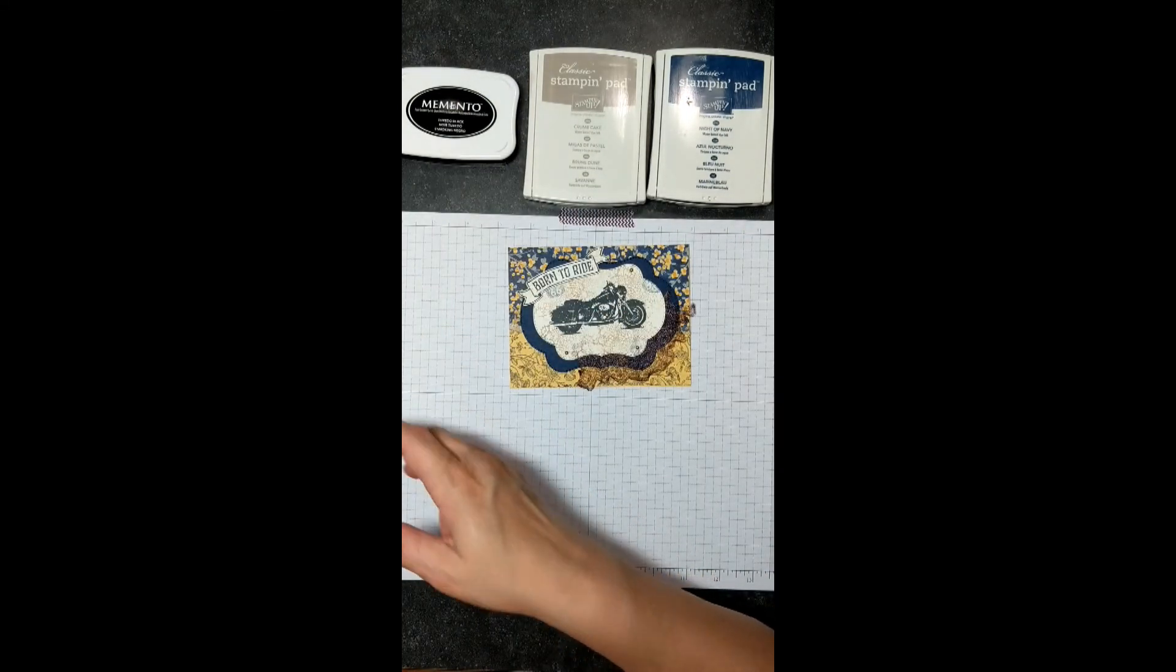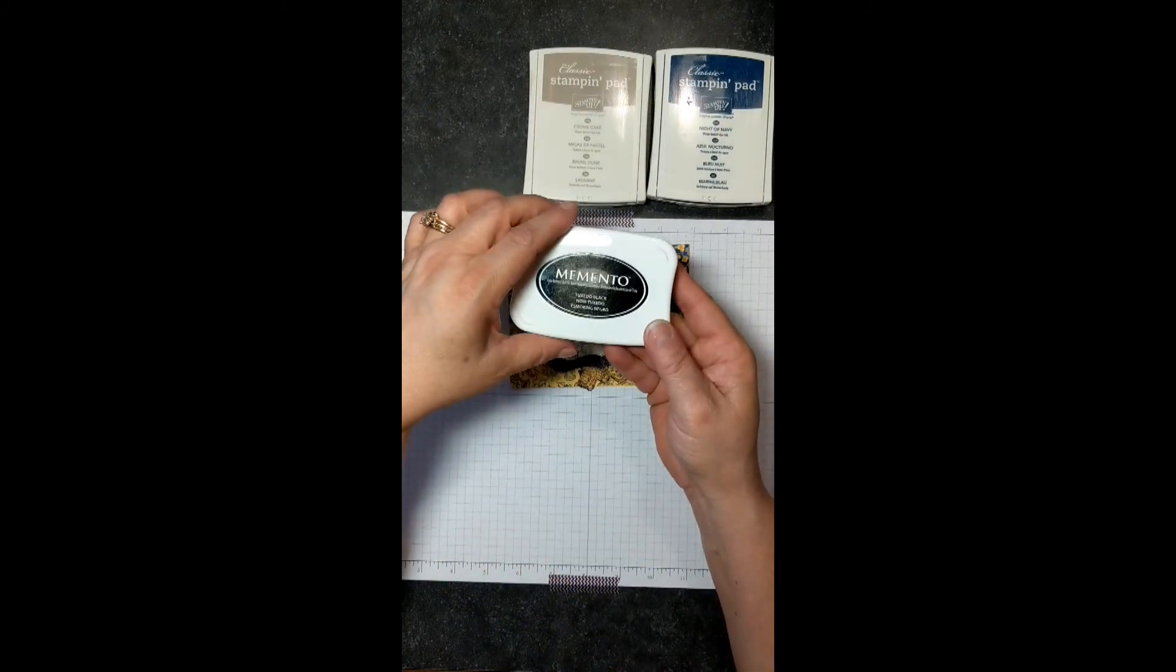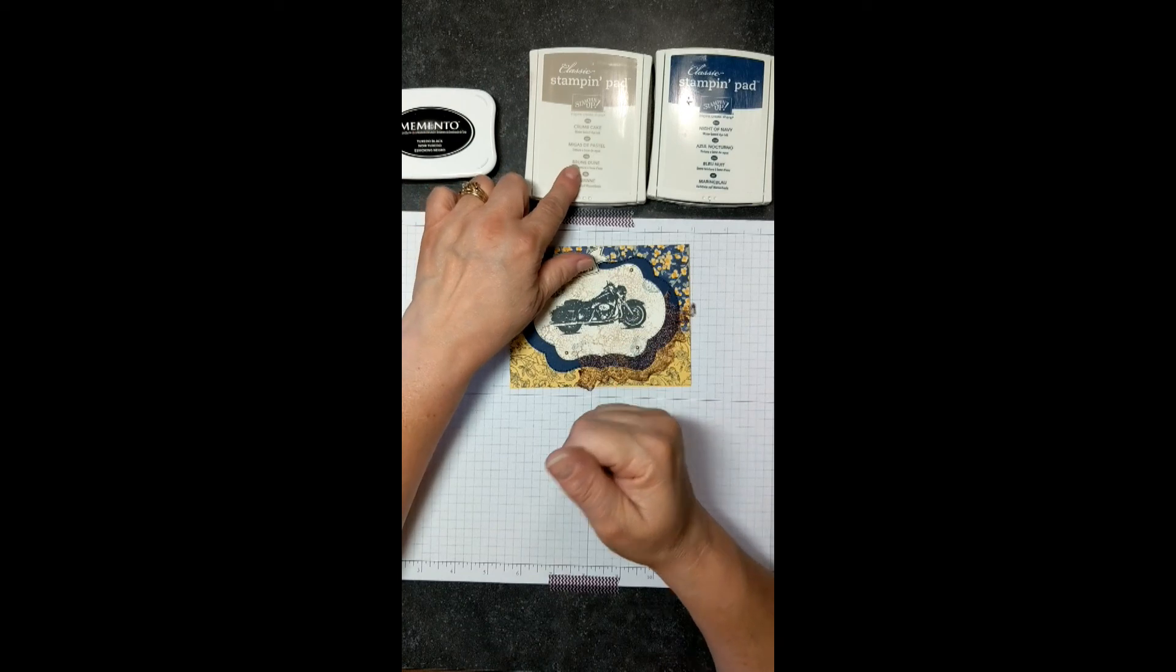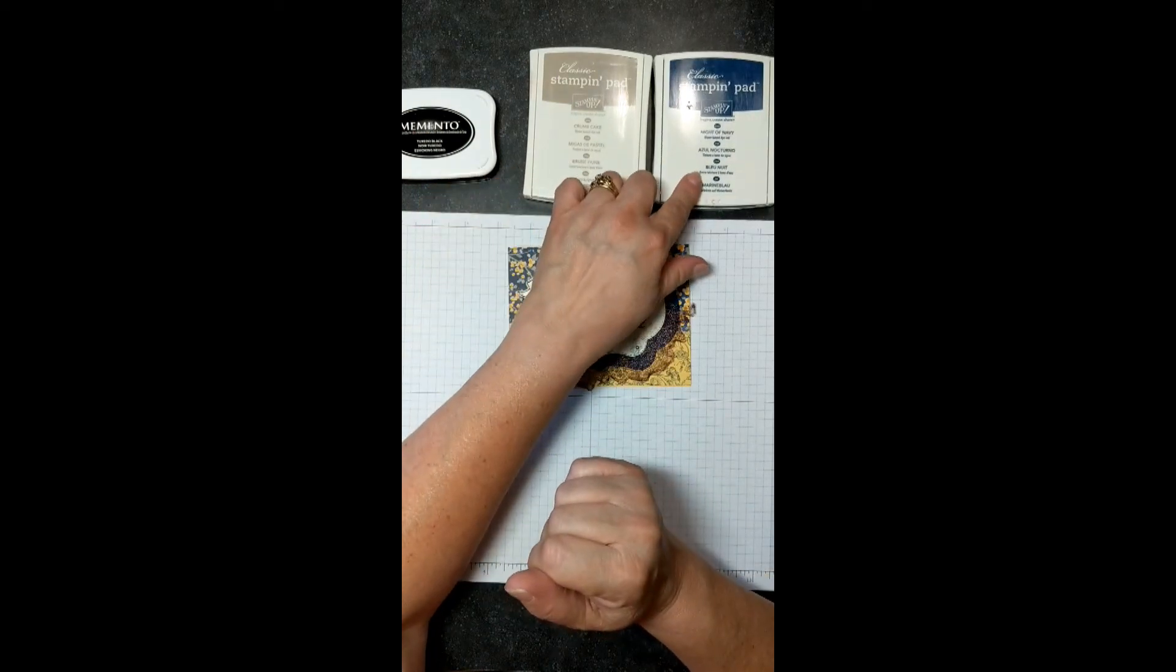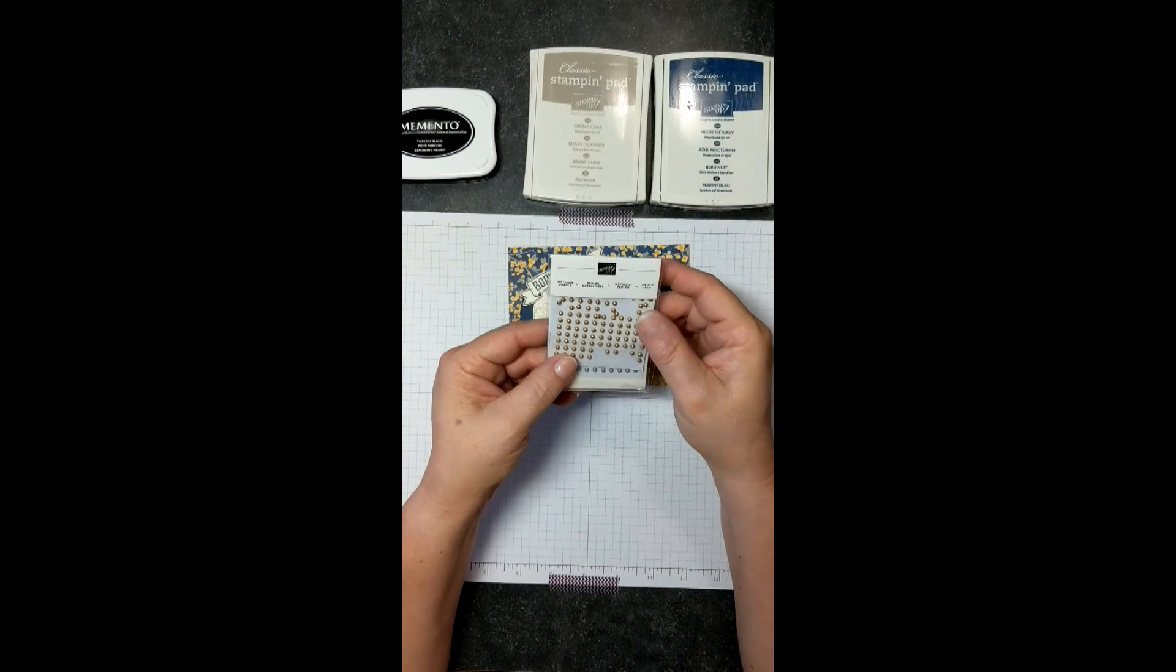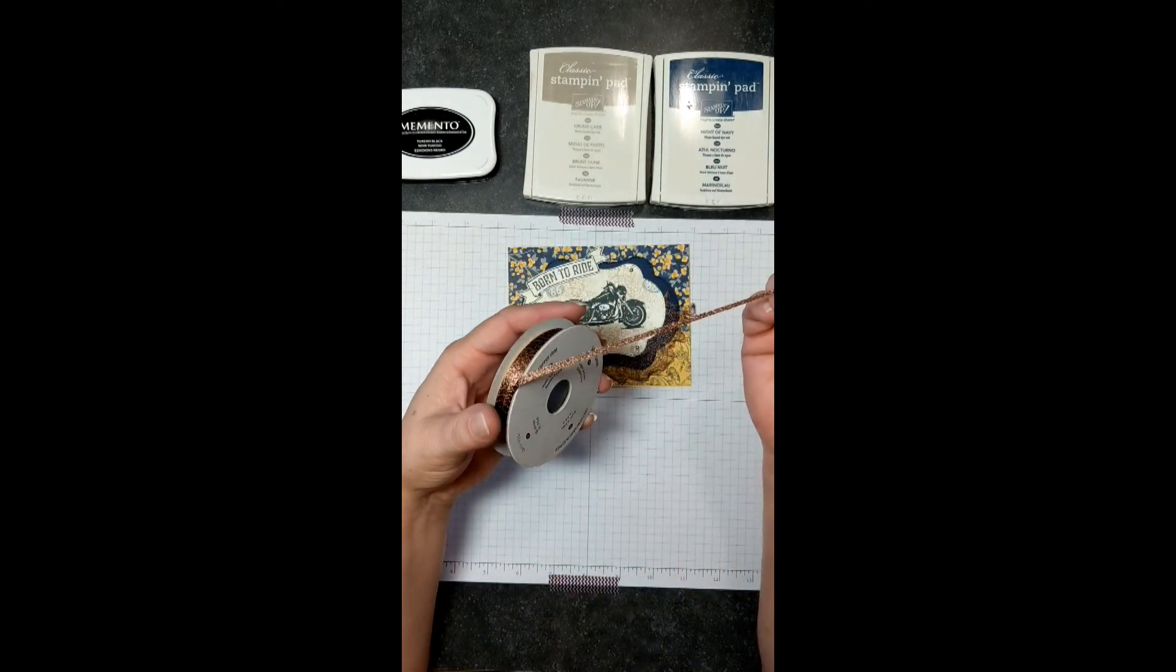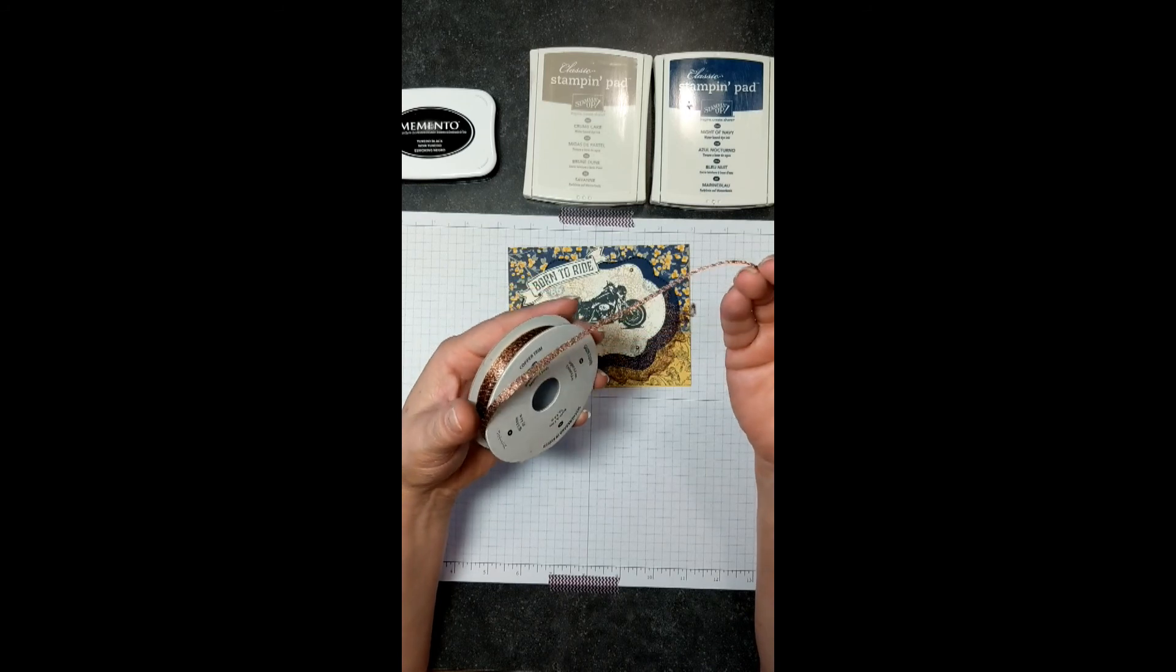Also, we will be using the Memento Tuxedo Black Ink, Crumb Cake, and Night of Navy. Then we have these fun little metallic pearls that we will be using, and the Copper Ribbon, which is my all-time favorite.